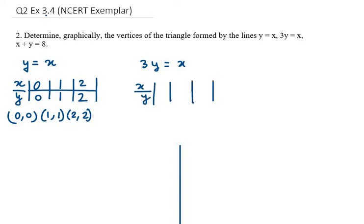For the second equation, 3y = x, we again take different values. I'll take y as 0, so x will be 0. If y is 1, then x will be 3. If y is 2, then x will be 6.